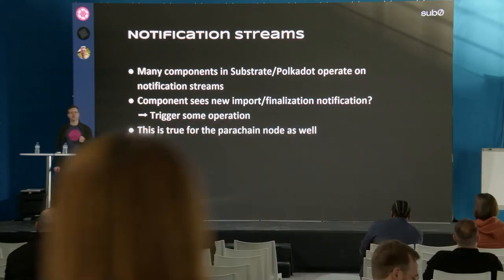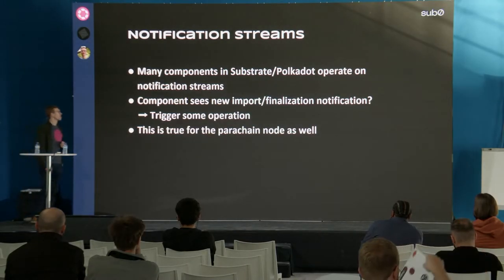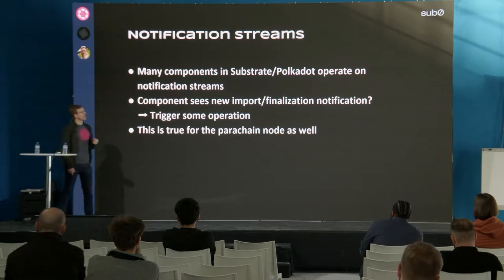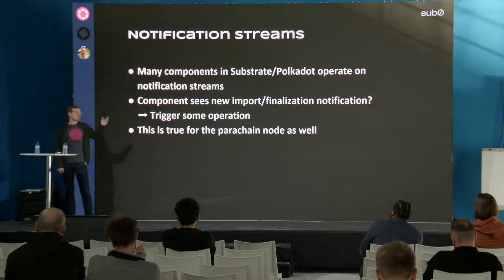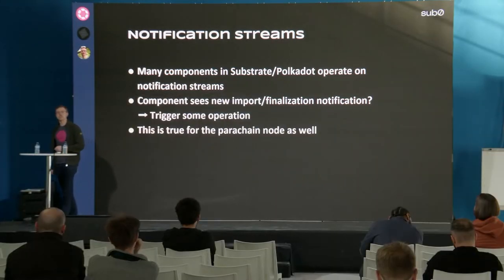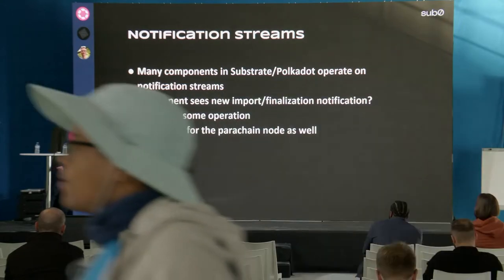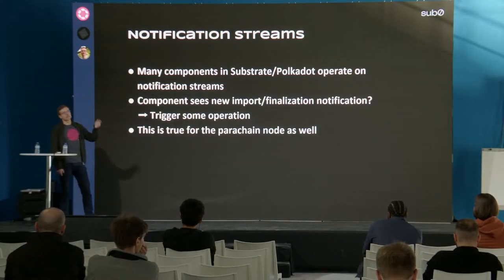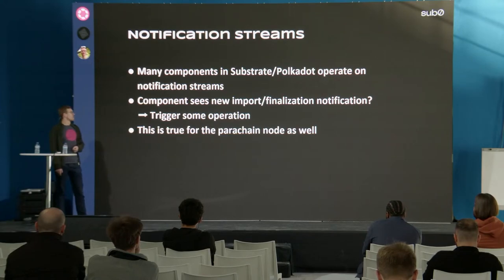A general thing to know is that a lot of systems in Substrate and also in the parachain node operate on notification streams. When a new notification comes in — for example an imported block notification or a finalization notification — we want to do something with it. Many components are driven this way: when you see a new finalized block, maybe you need to notify some network participants or update some internal cache. This is true for the parachain node as well.